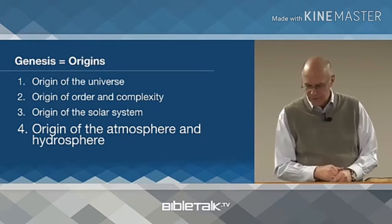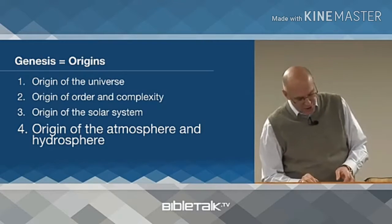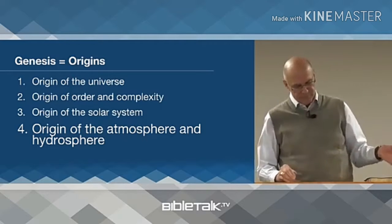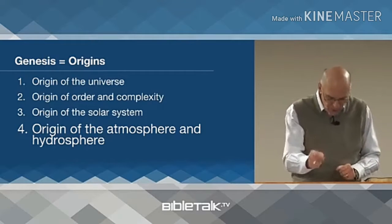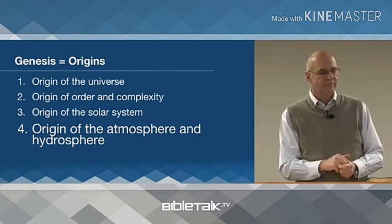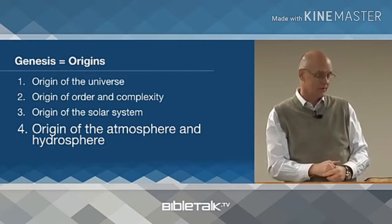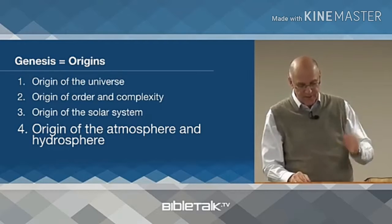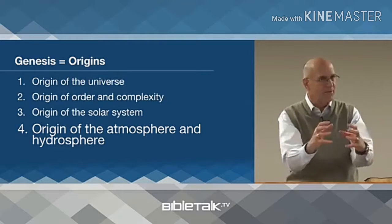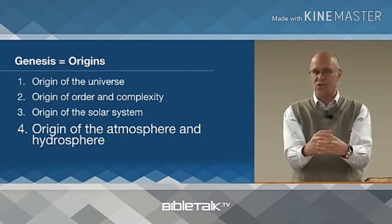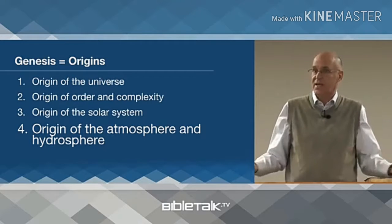Genesis explains the origin of the atmosphere and the hydrosphere. The combination of liquid water, oxygen, and nitrogen — that kind of atmosphere that sustains life — has only been found in its present state here on Earth. Scientists say they've looked as far as they can look and still haven't found it elsewhere. Genesis explains the how, the who, and the why that this unique mixture came to be here on Earth.